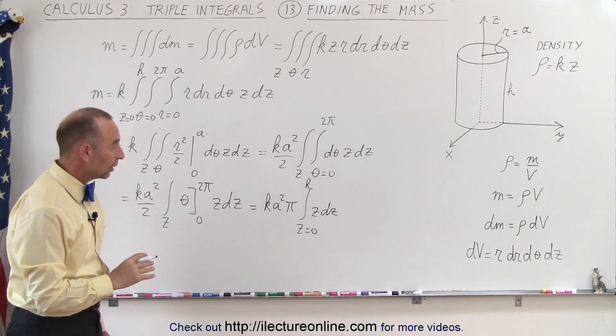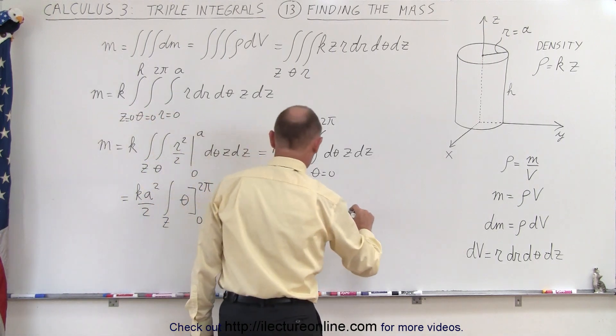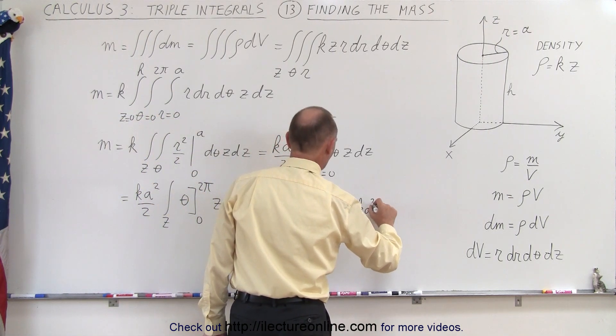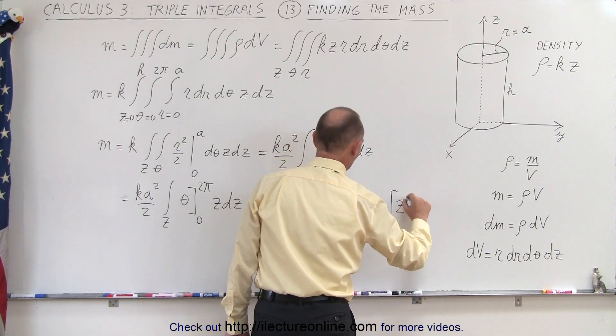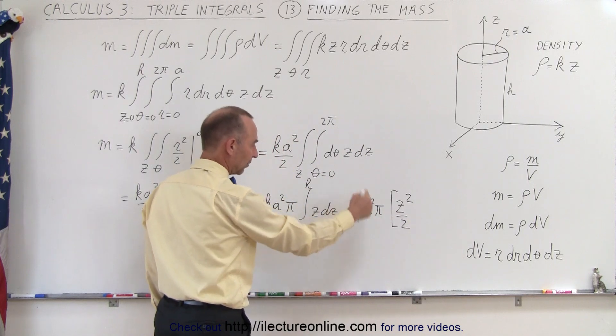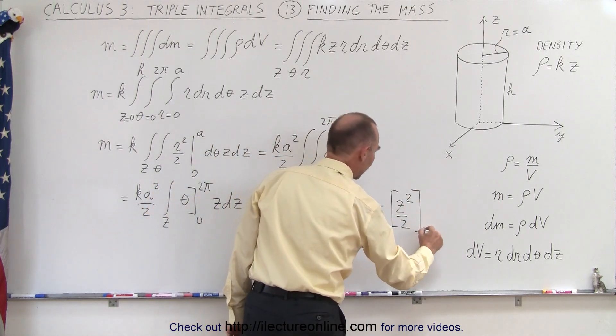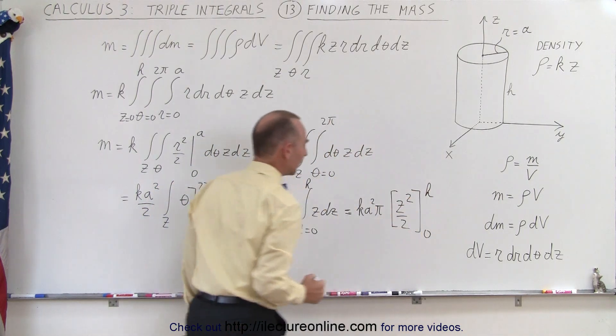Finally, we can now do the third integral. This becomes k a squared times π times z squared over 2, because integrating z dz we get z squared over 2, evaluated from 0 to h.